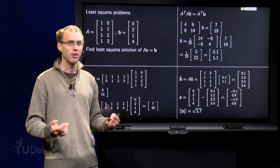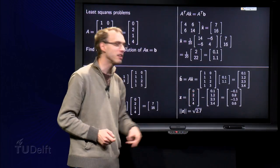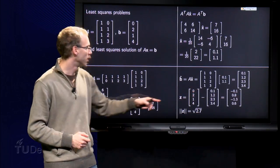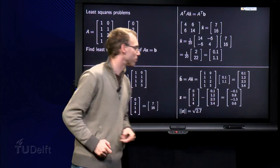z, containing the errors, is the difference from b and b hat. So we compute: minus 0.1, 0.8, minus 0.3 and 0.6.